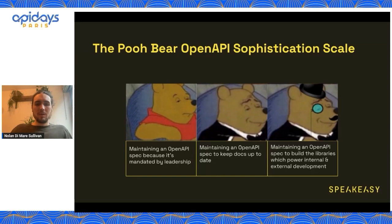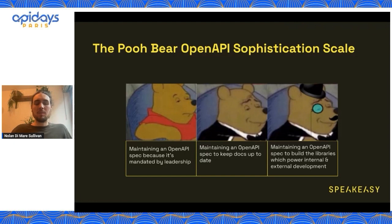Then at some point, people will realize that if we're maintaining this thing, we might as well make it valuable. Usually the first application of the OpenAPI spec is for keeping documentation up to date. The OpenAPI spec is a reference of your API, and that can be used to create the classic three-panel documentation site that you've probably seen when you're trying to get started using an API. So that's kind of phase two, and to be honest, that's where a lot of companies are probably at today.